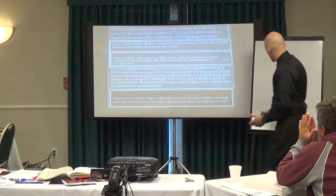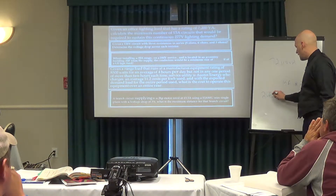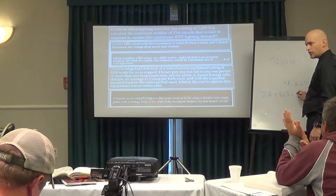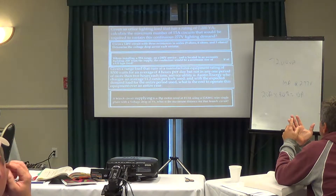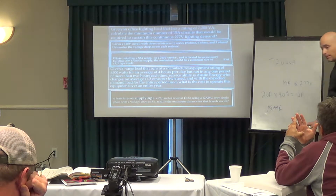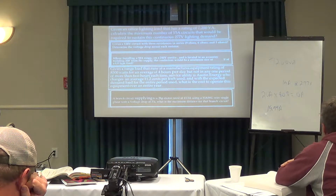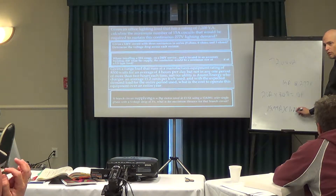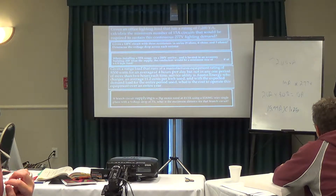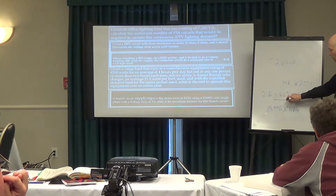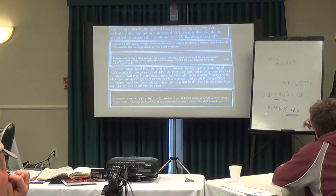Take a 20 amp breaker: 20 amps times 80% gives you 16 amps. If I had a motor load that was 15.99 amps and that motor is continuous duty, I would multiply that by 125%, and what would I get? 19.99 — essentially 20 amps. So 16 amps and 20 amps are reciprocals of each other in this context — 80% and 125% are mathematical reciprocals.